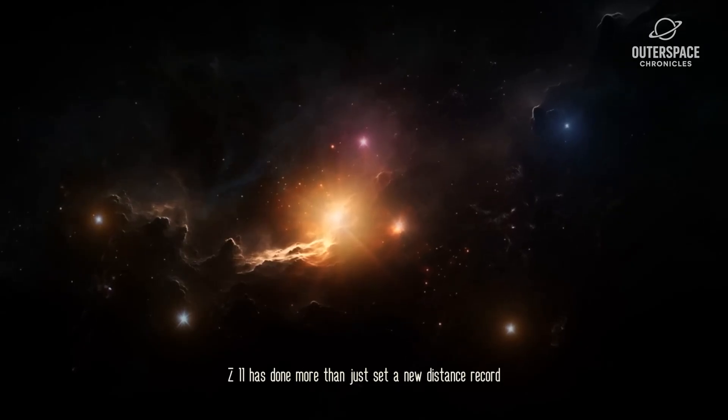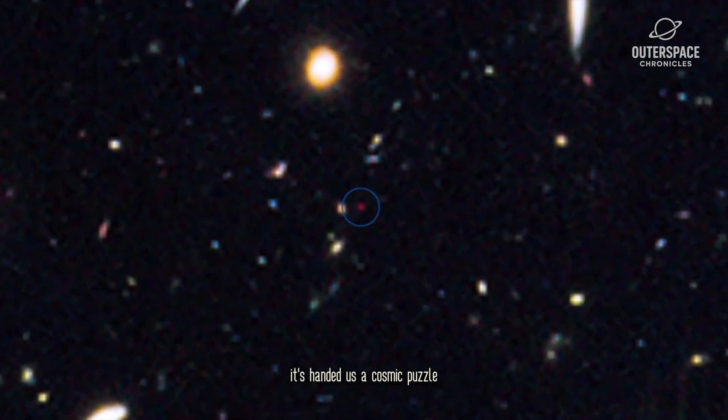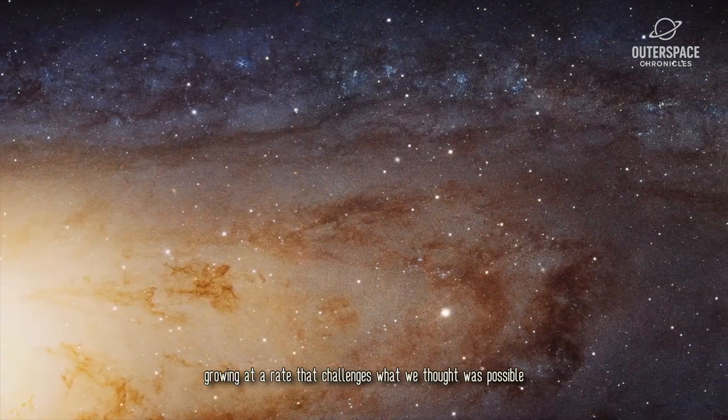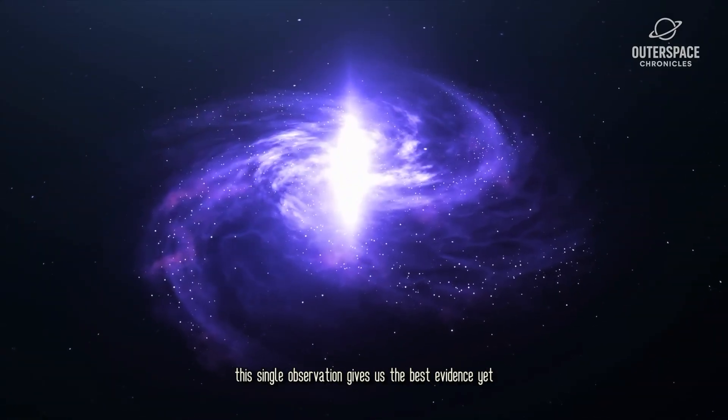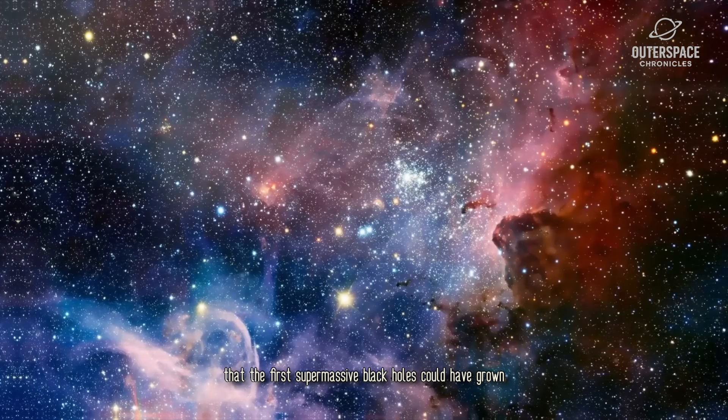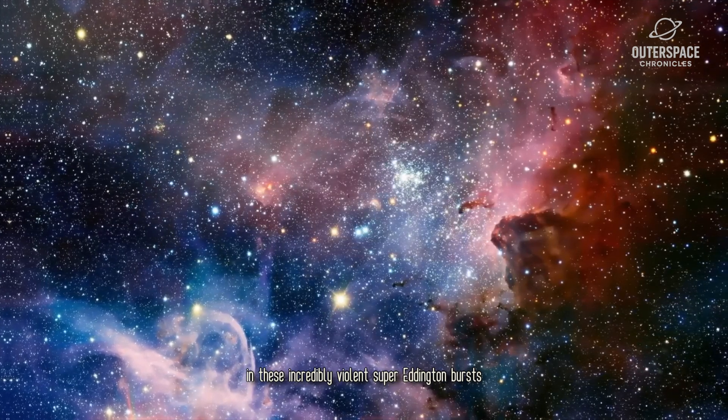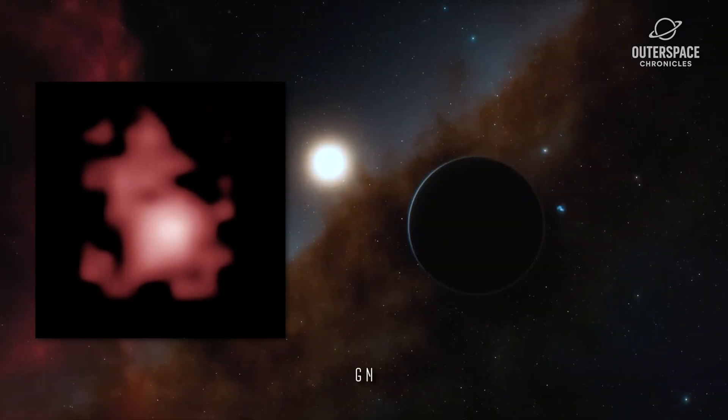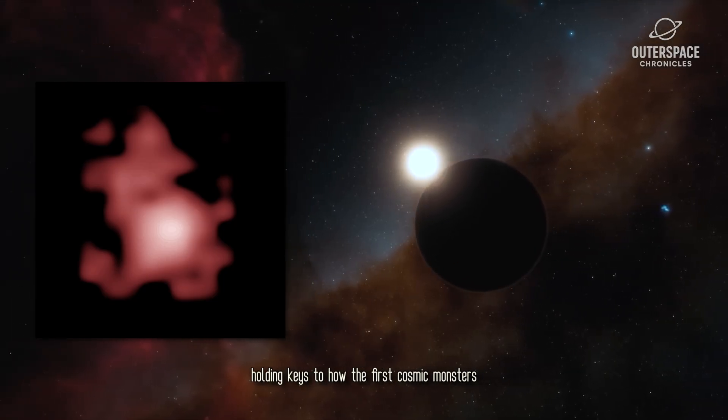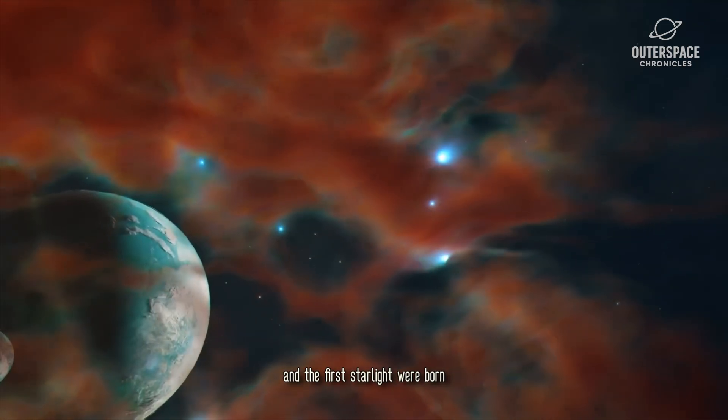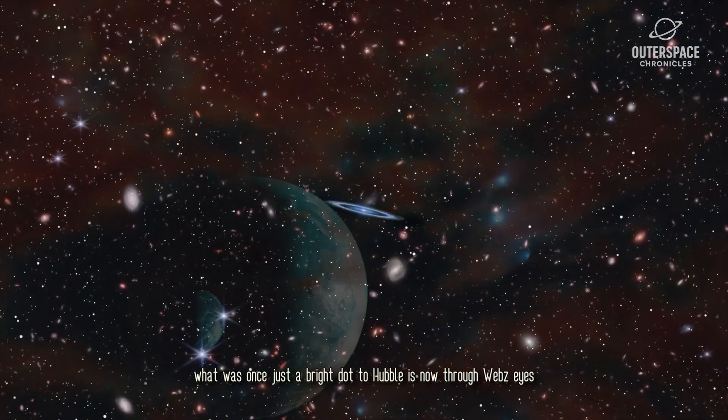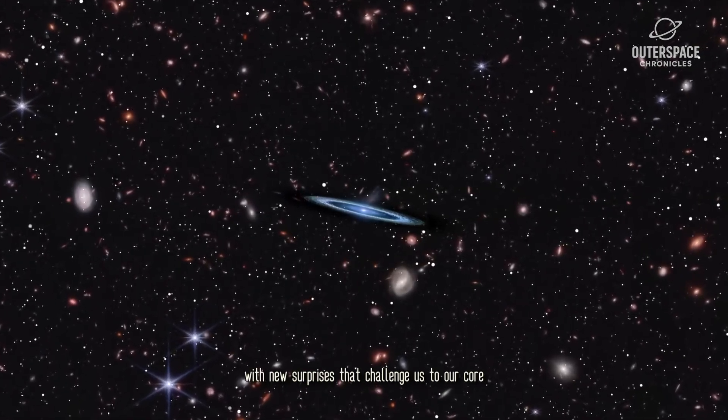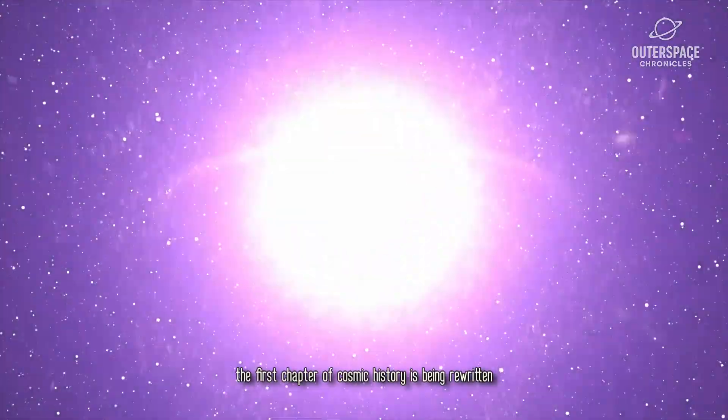Webb's look at GNZ11 has done more than just set a new distance record. It's handed us a cosmic puzzle that's forcing a major scientific rethink. We've found a black hole that seems too big too soon, growing at a rate that challenges what we thought was possible. This single observation gives us the best evidence yet that the first supermassive black holes could have grown in these incredibly violent super-Eddington bursts. At the same time, we found the potential cradle of the universe's legendary first stars. GNZ11 is a Rosetta Stone for the early universe, holding keys to how the first cosmic monsters and the first starlight were born. What was once just a bright dot to Hubble is now, through Webb's eyes, a chaotic and revolutionary landscape. It's an amazing reminder that every time we look deeper, the universe is waiting with new surprises that challenge us to our core. The first chapter of cosmic history is being rewritten, and we're lucky enough to be reading it.